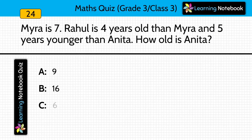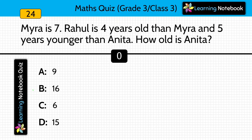Question twenty-three: Mayra is 7 years old, Rahul is 4 years older than Mayra, and 5 years younger than Anita. How old is Anita? Answer is 16. Rahul's age is 7 plus 4 equals 11. Since Rahul is 5 years younger than Anita, Anita's age is 11 plus 5 equals 16 years.